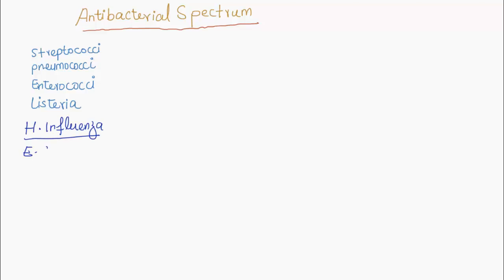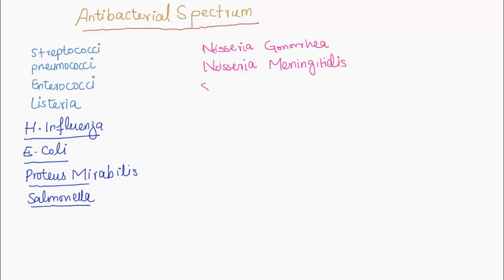Antibacterial spectrum of amoxicillin: it is effective against gram-positive and gram-negative bacteria, which include streptococci, pneumococci, enterococci, Listeria, H. influenzae, E. coli, Proteus mirabilis, Salmonella, Neisseria gonorrhoeae and Neisseria meningitidis, Shigella, Chlamydia trachomatis, Borrelia burgdorferi, and Helicobacter pylori.